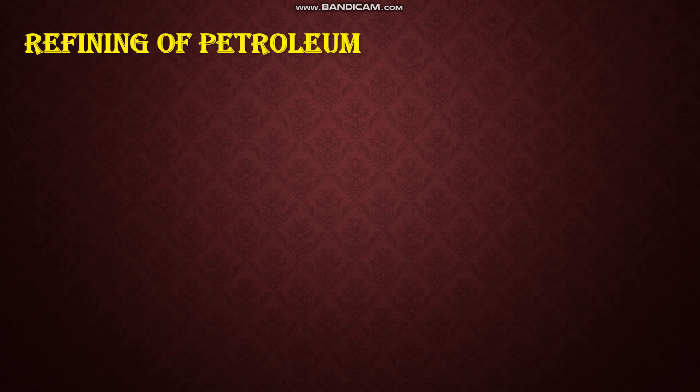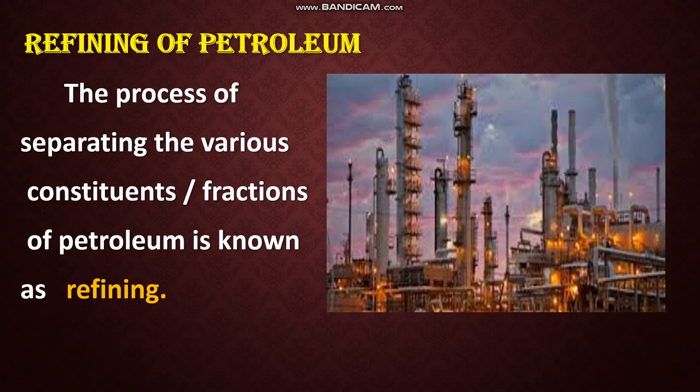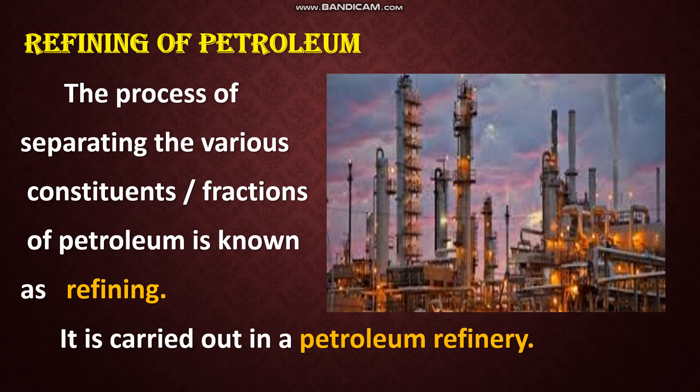Now let us see what is meant by refining of petroleum. As I said, petroleum is a mixture of so many substances like petrol, kerosene, diesel, petroleum gas, and more. So how do we separate these substances from petroleum? That process is called refining of petroleum. The process of separating the various constituents or fractions of petroleum is known as refining. It is carried out in a petroleum refinery.